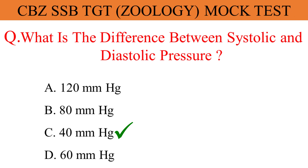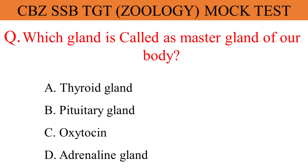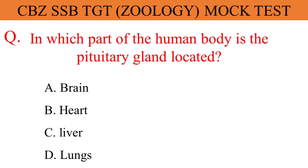Which gland is called the master gland of our body? The given options are A. Thyroid gland, B. Pituitary gland, C. Oxytocin, D. Adrenaline. And the correct answer is option B. Pituitary gland.